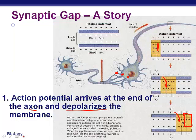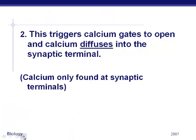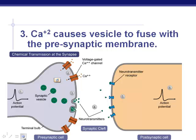...it triggers calcium gates to open. Calcium diffuses into the synaptic terminal, and it's only found at these terminals — not at the other gates throughout the axon. What that calcium does is it causes the vesicles carrying the neurotransmitter to fuse with the pre-synaptic membrane. Pre-synapse is this side; post-synapse is the other side.